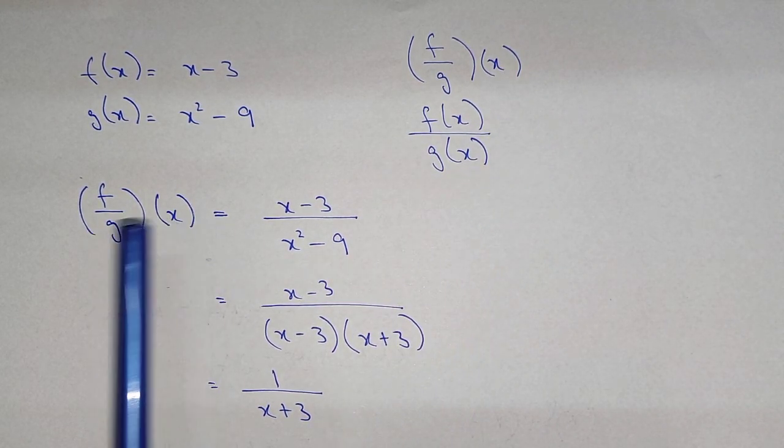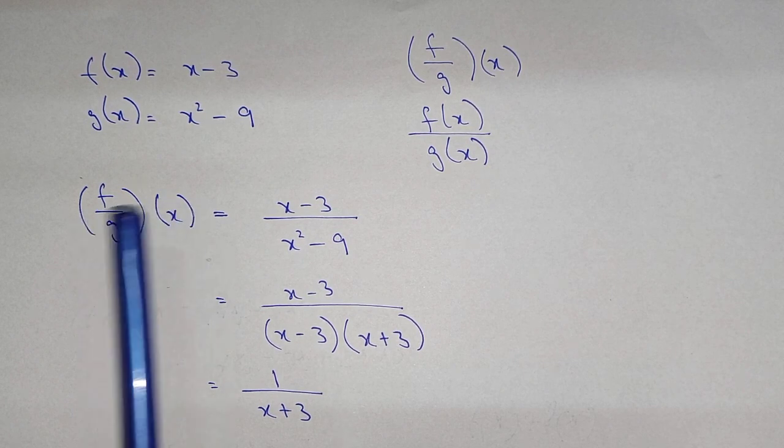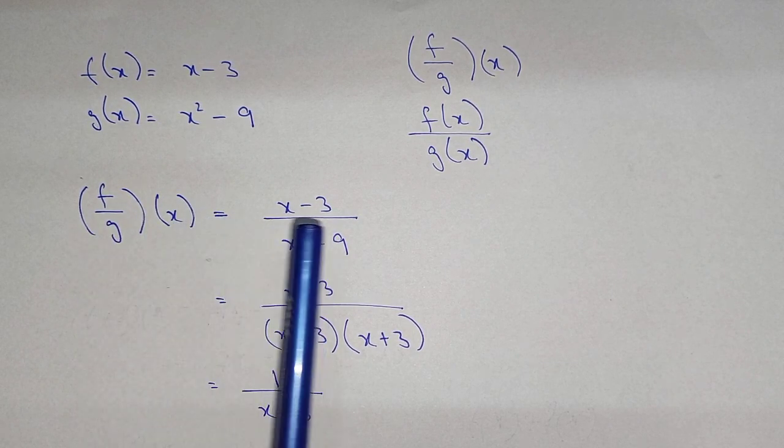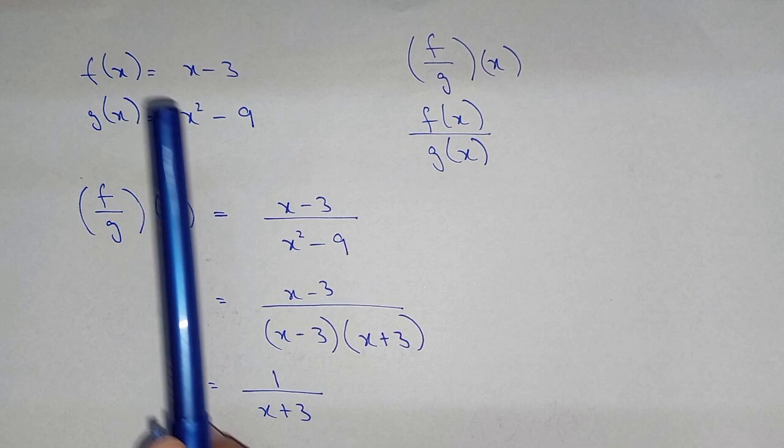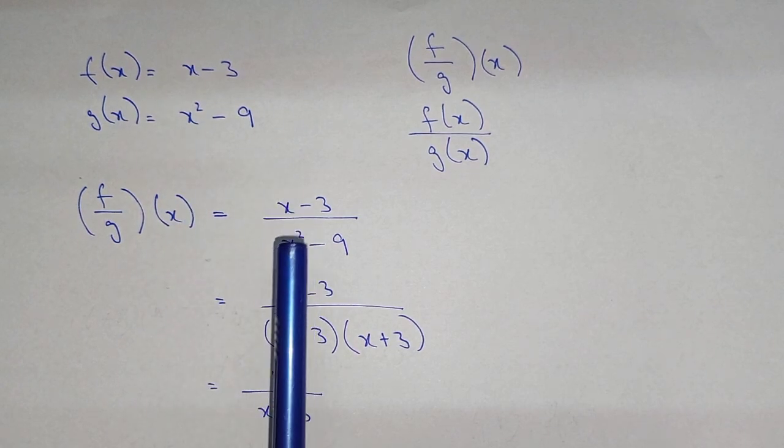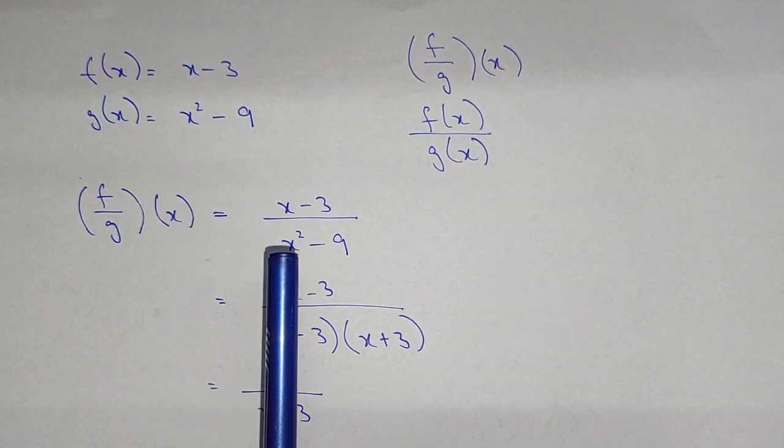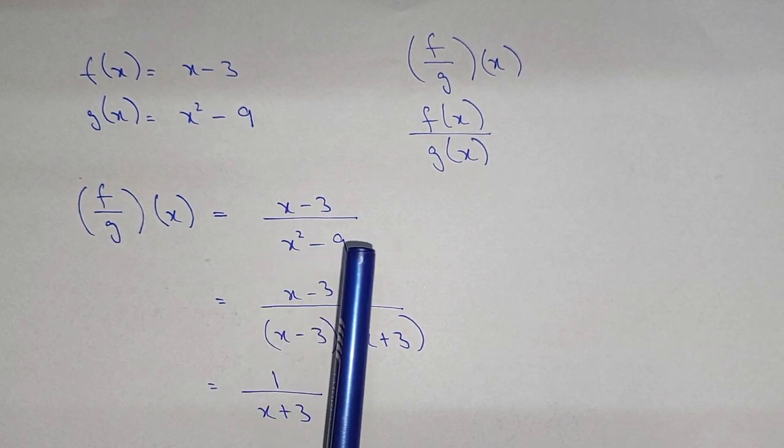So writing down the standard form of the notation of dividing the functions equal to the value of f of x, that is x minus 3, divided by the value of g of x, that is x square minus 9.